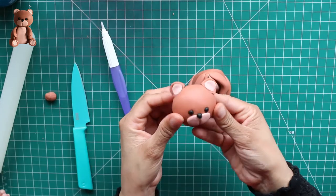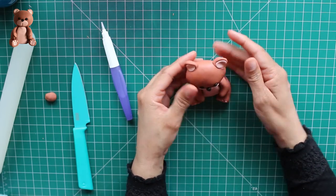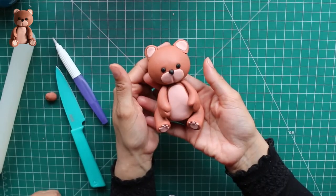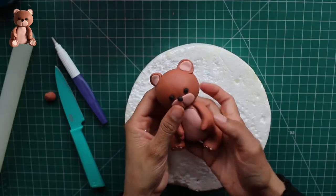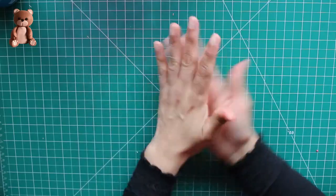So we'll have to let this body rest along with the head for at least 48 hours, 24 to 48 hours, and it will harden and then it will be hard enough to place on the cake.